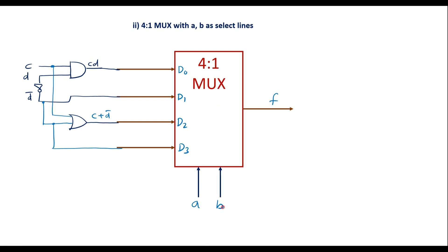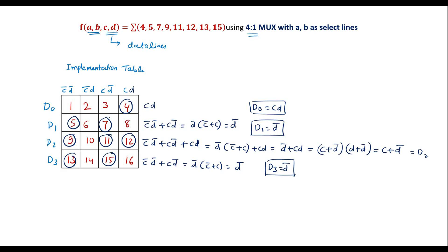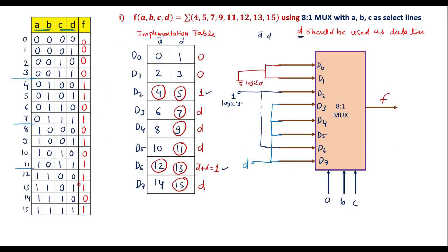When AB = 00, D0 is selected and F = CD. When AB = 01, D1 is selected and F = D̄. When AB = 10, D2 is selected and F = C + D̄. When AB = 11, D3 is selected and F = D̄. We can verify these against the truth table — they will show the same output values. Thank you for watching.